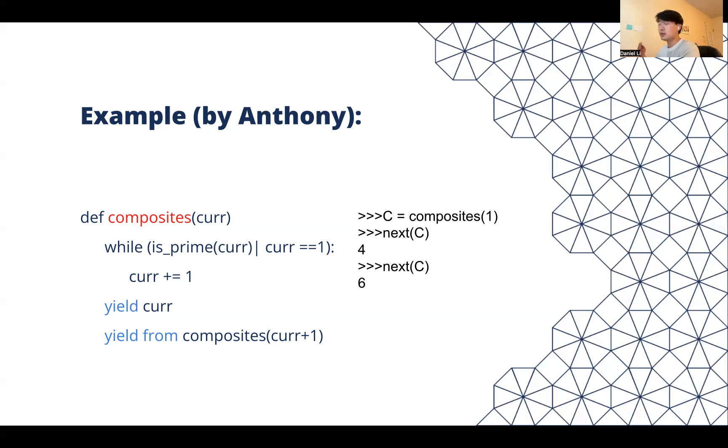When we call next, it outputs four. When we call next again, it goes into that yield from statement. So it outputs six, then eight, skipping seven because seven is prime, then nine, then ten, and so on.